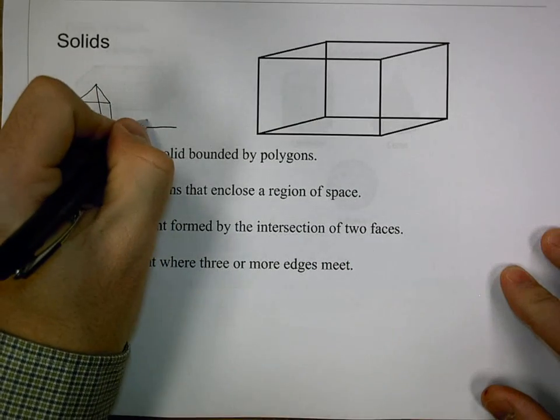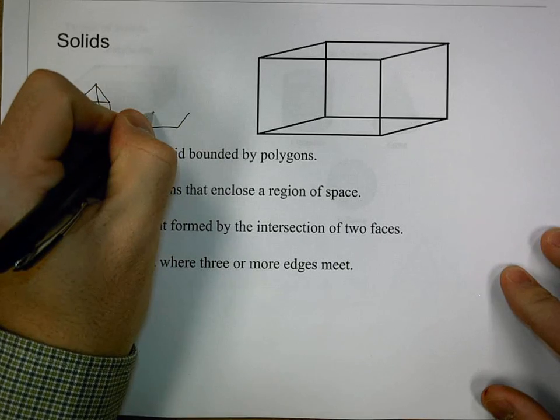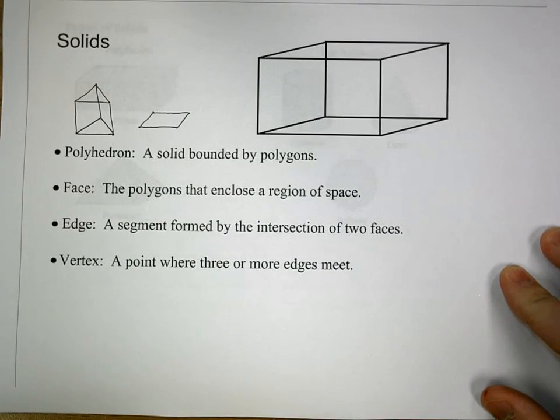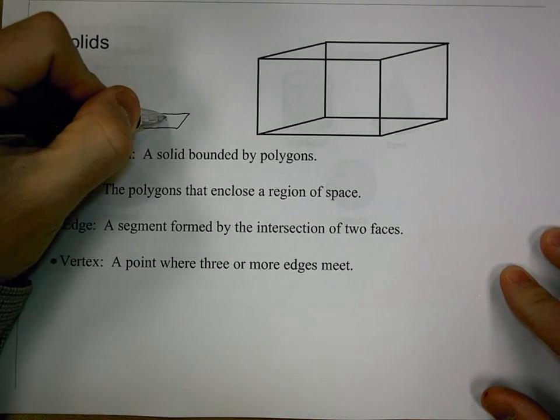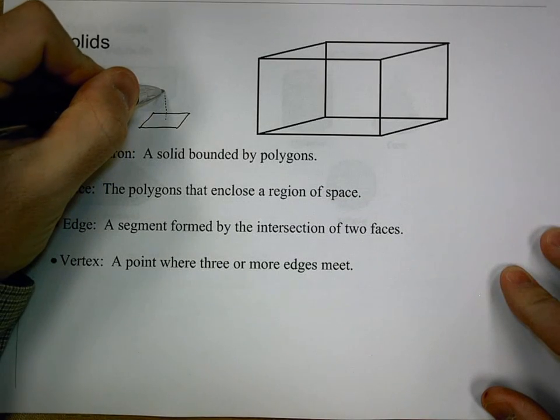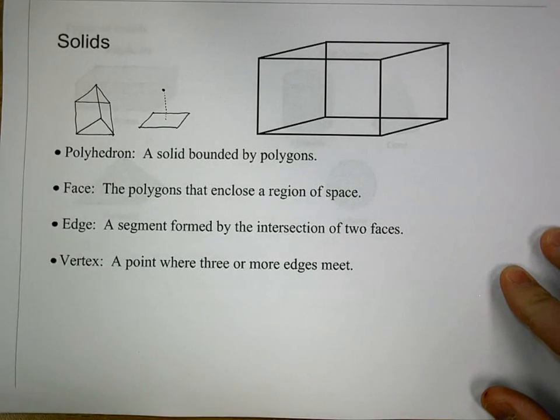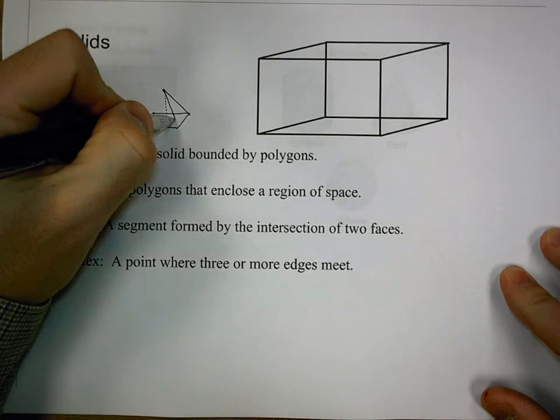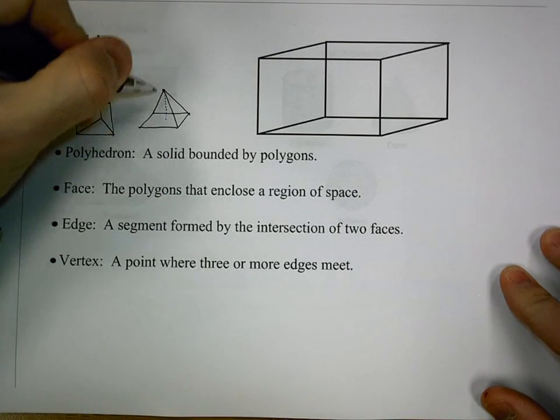We could also have something that we're going to call a pyramid, and this is one where we draw the base. This is a rectangle again, but this time we're not going to have a top and a bottom, we're going to have that bottom base and a point at the top, just like the pyramid you would think of.